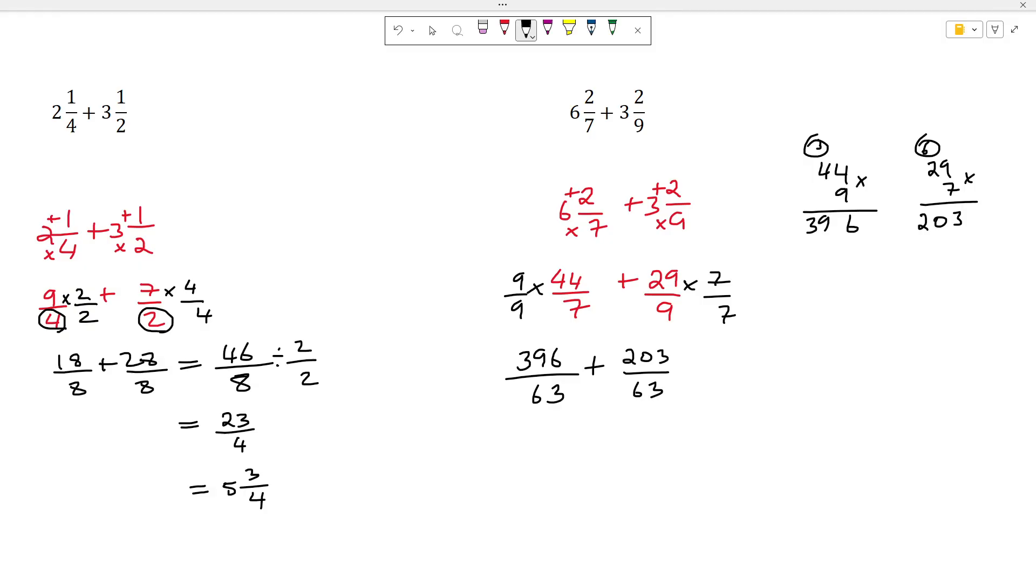Now the denominators are the same, so we can go ahead and add our numerators. So we have 396 plus 203, it's going to give us 9, 9 and 5. So we have 599/63.